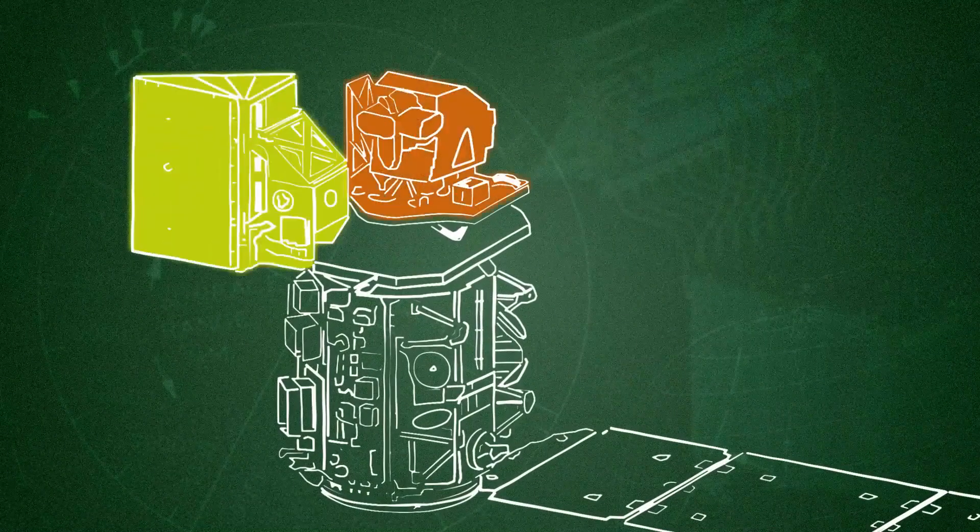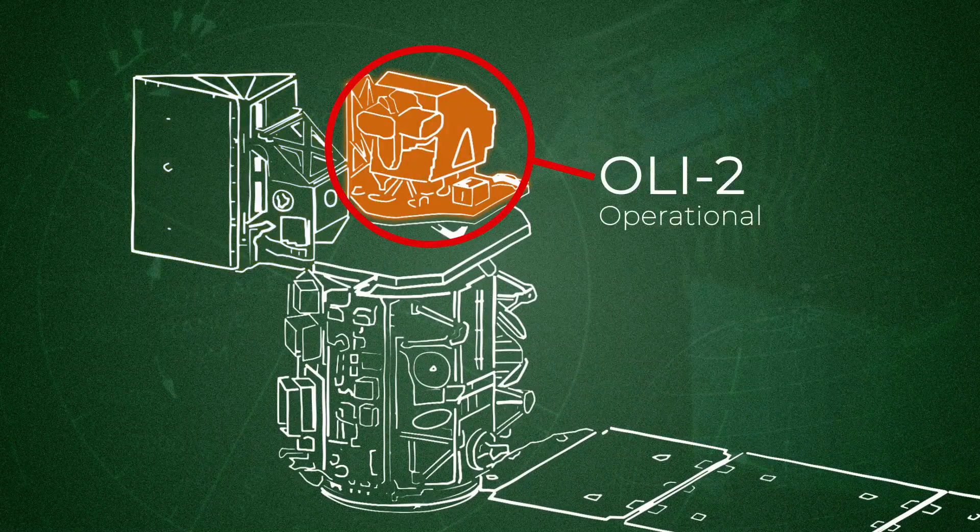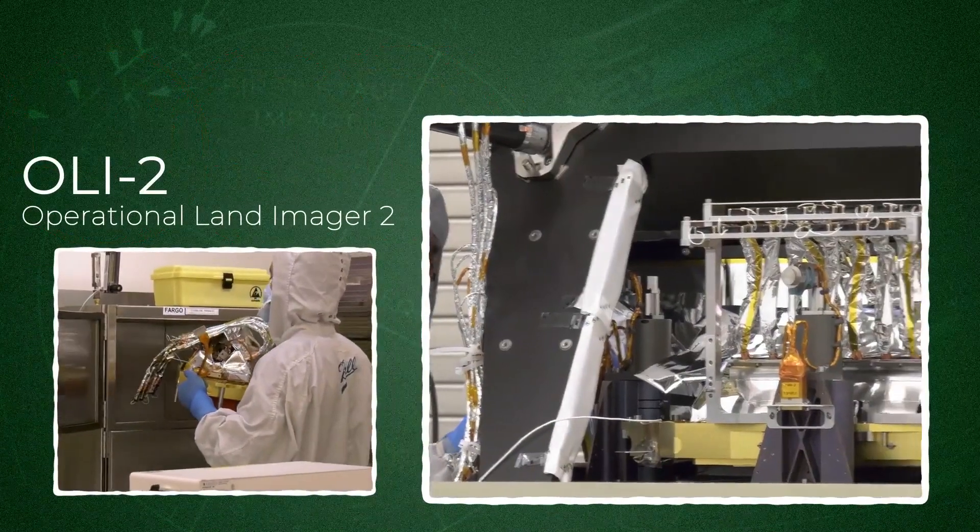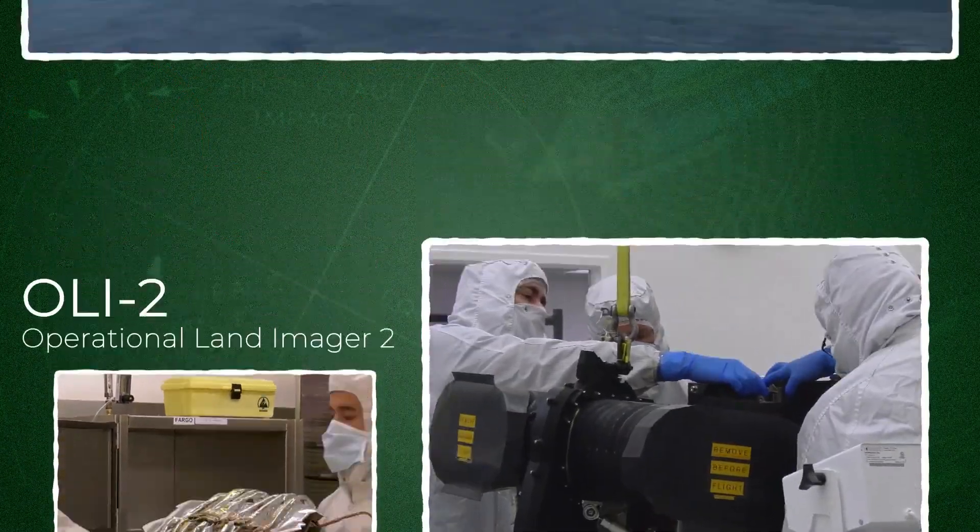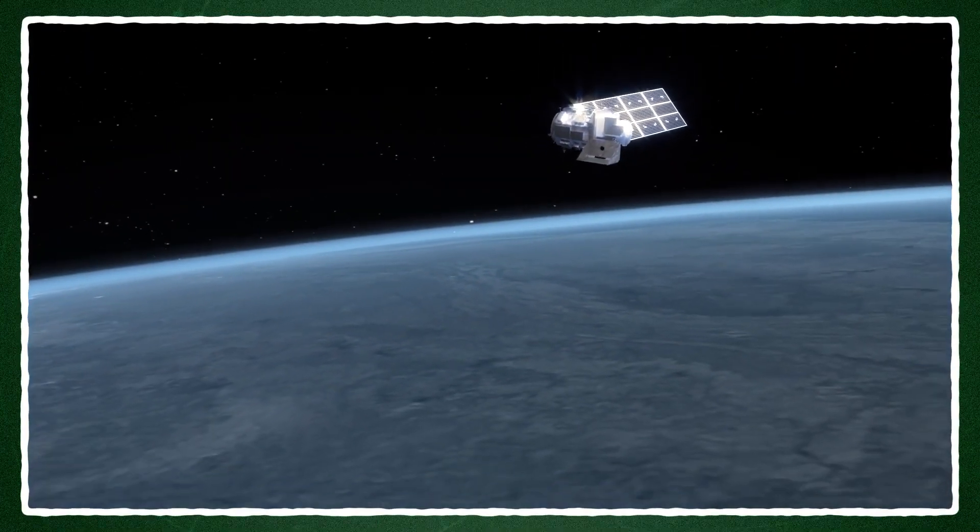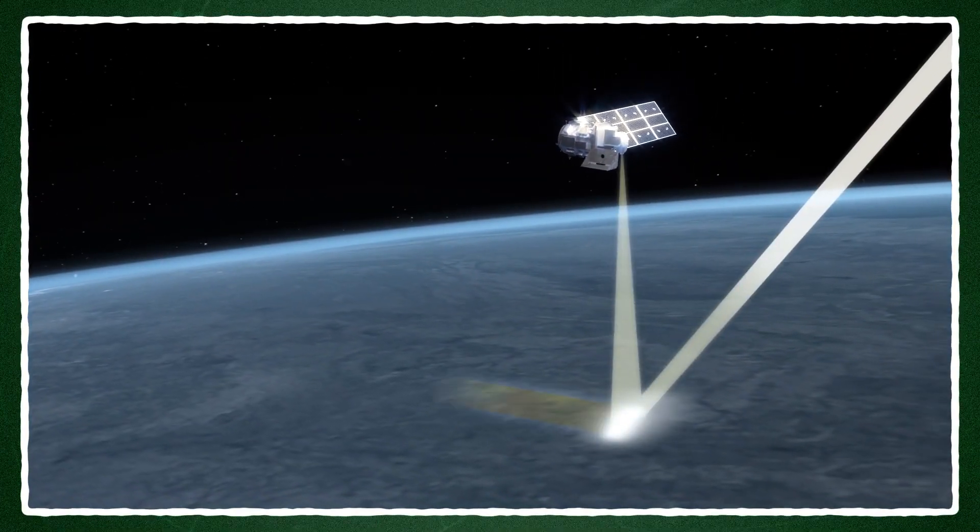There are two instruments aboard Landsat 9. OLI-2 is all about light. Once in orbit, OLI-2 collects sunlight reflected off Earth's surface.